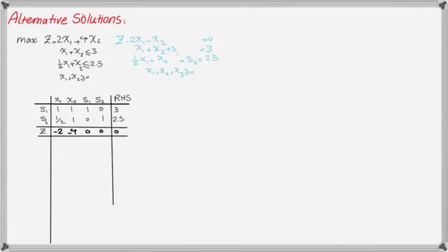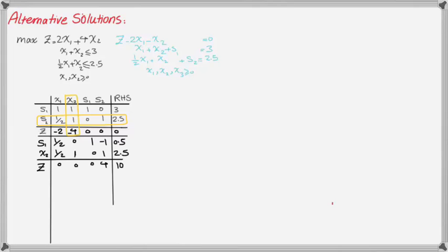To solve this problem, since it's a max problem, we find the most negative value in the row of Z and then implement the minimum test. We implement the elementary row operation to make X2 a basic variable in the next table instead of S2.